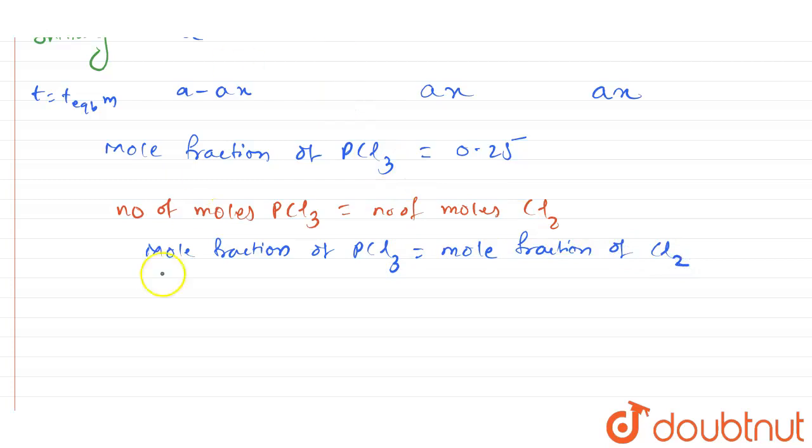This will imply the partial pressure is going to be equal to the mole fraction, that is MF of chlorine, multiplied by the total pressure.